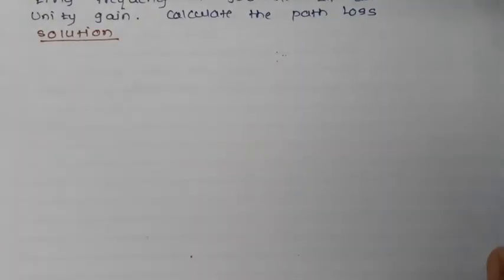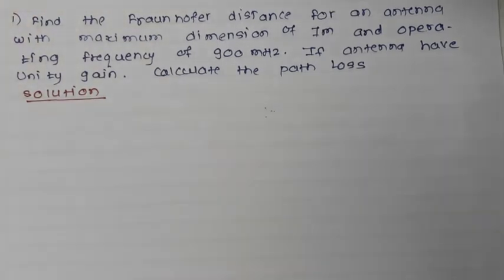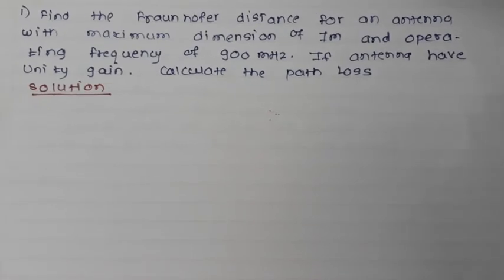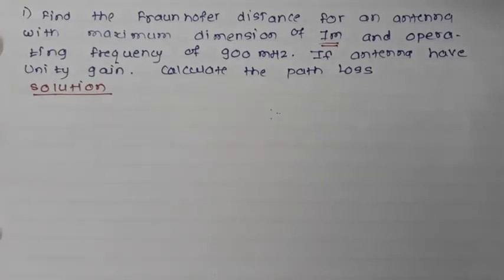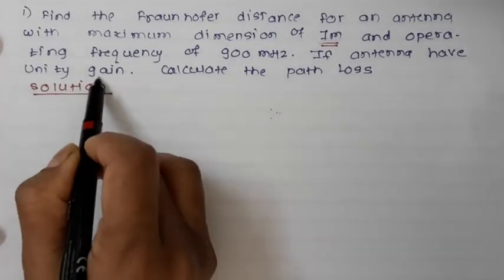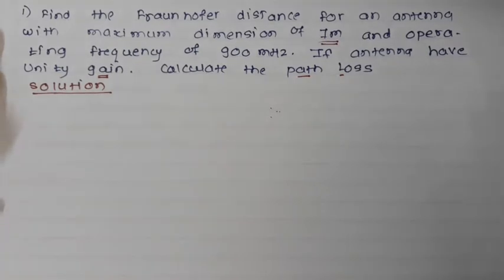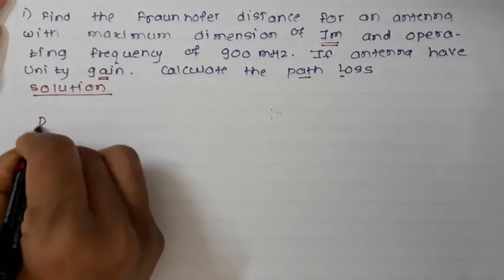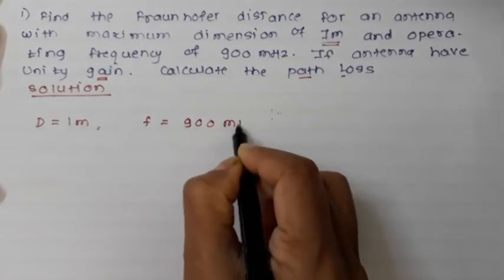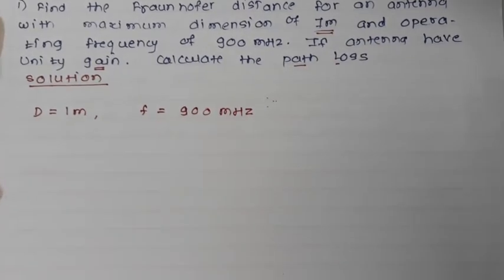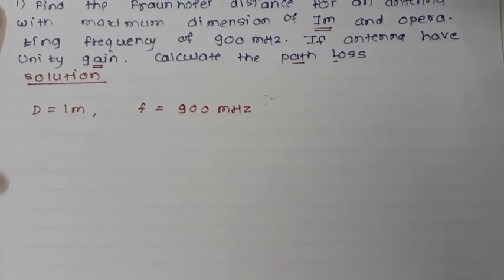Now let us solve a problem based on the free space model and the Fraunhofer distance. The first problem asks us to find the Fraunhofer distance for an antenna with a maximum dimension of 1 meter operating at a frequency of 900 MHz. If the antenna has unity gain, calculate the path loss. The given values are: dimension D = 1 meter and frequency f = 900 MHz. To find DF we need λ, which we can calculate from the given frequency.